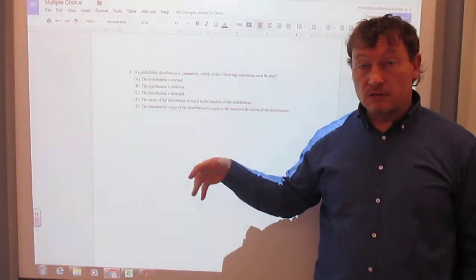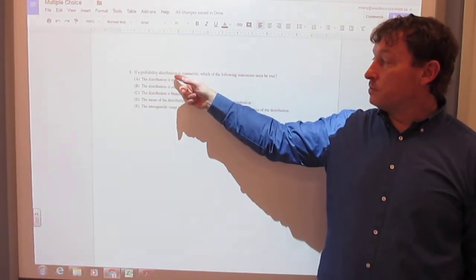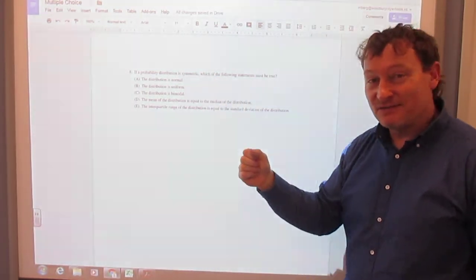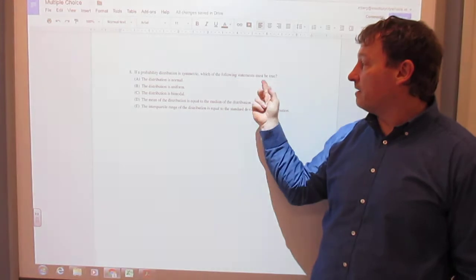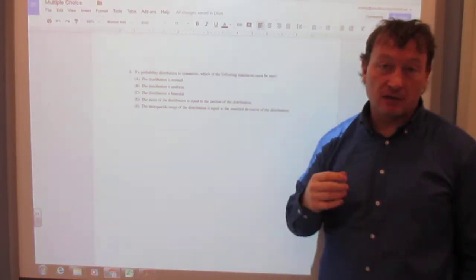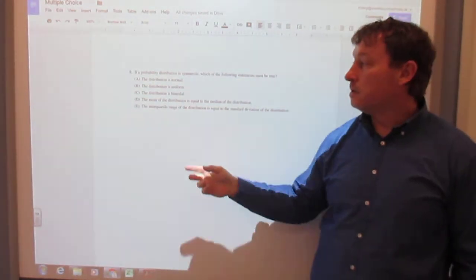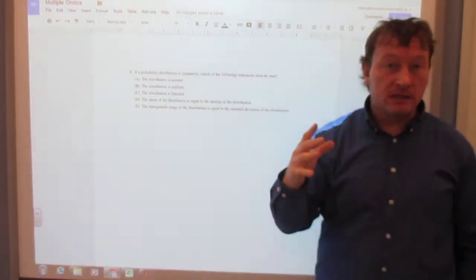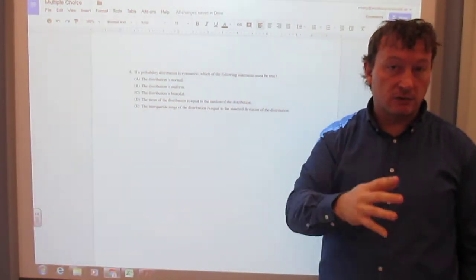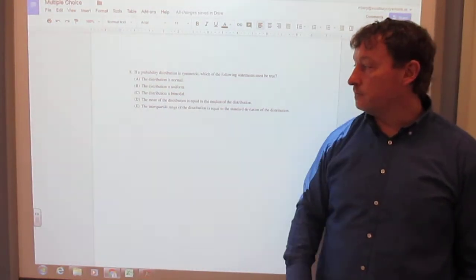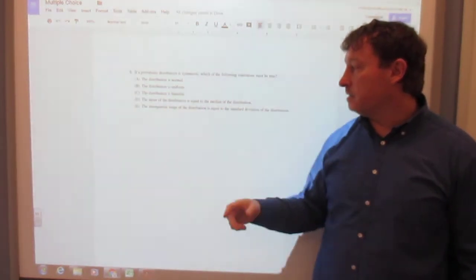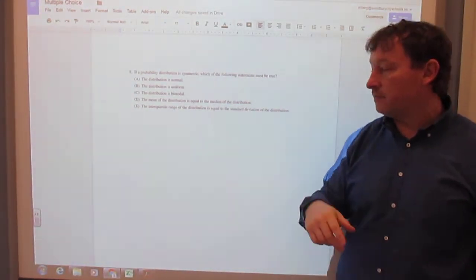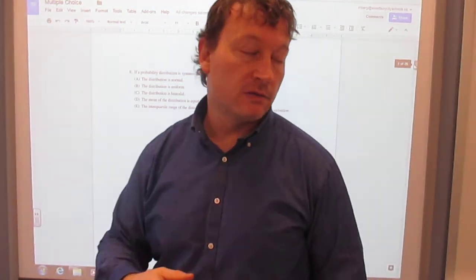Notice we're going through every single one. For these questions, you have to go through every single point. If a probability distribution is symmetric, which of the following statements must be true? Not could be true, but must be true. Must it be normal? Are they saying is the only distribution that's symmetric normal? Must it be uniform? Must it be bimodal? Must the mean equal the median? Must the interquartile range equal the standard deviation? So think through that one.